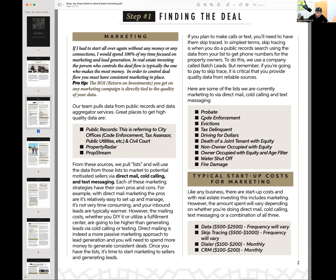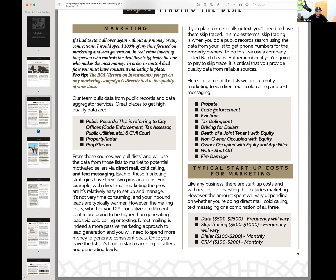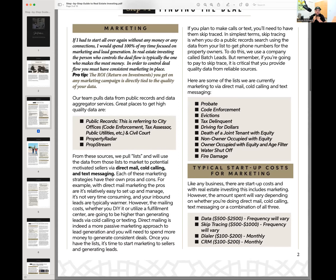We're targeting sellers for whom selling for maximum value is a priority, but not the top of the list. We see eight to ten circumstances over and over again — people inheriting unwanted houses, properties with physical distress or code enforcement issues, people going through eviction, tax-delinquent owners, properties where one of the owners on title has died. That's the avatar of the seller we're marketing to, and all of this information is a matter of public record. Sites like Property Radar and PropStream aggregate this data, or you can go directly to the courts or county departments to pull these lists.